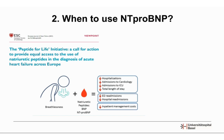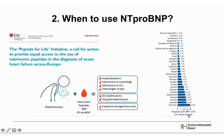Surprisingly, this viewpoint also showed that despite the high ESC guideline recommendation, not every European country has the ability to measure NT-proBNP in the emergency department. The graph shows the number of hospitals with BNP availability per million people. Germany performs well, but this availability gap must change because there is no doubt about the necessity of measuring NT-proBNP.